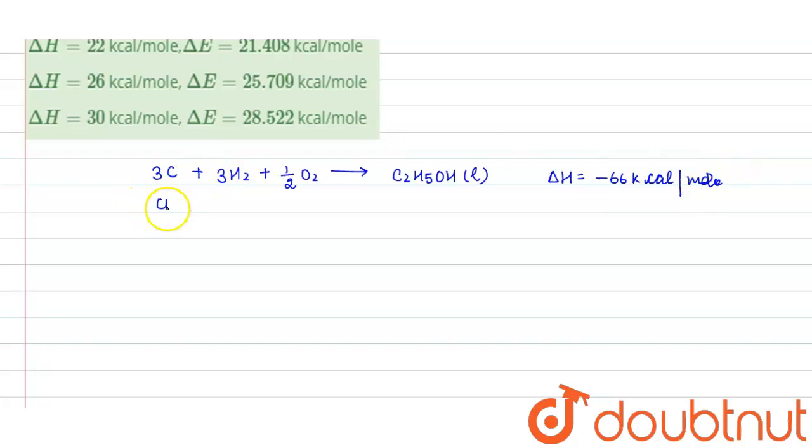And its heat of formation given is minus 66 kilocalorie per mole. Now combustion of ether reaction, this is your first equation, this is your second equation. Combustion of ether reaction, that is this ether when reacts with O2, ether is in gaseous form, it will form 2CO2 plus 3H2O. So its heat of combustion given is minus 348 kilocalorie per mole.